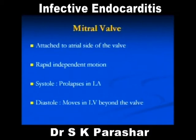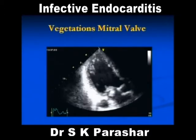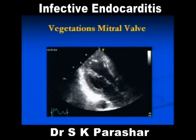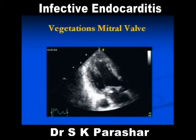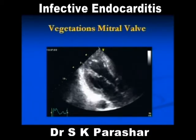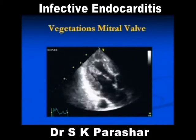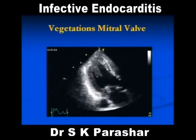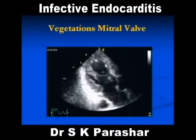Mitral valve — attached to the atrial side of the valve, that is the upstream side. In systole, the mitral valve closes, so the vegetation will come into the LA; in diastole it goes down. In a three-chamber view you can see the mitral valve vegetation attached to the upstream side of the mitral leaflet — an irregular mass.